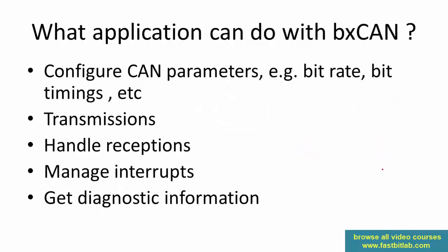As an application developer using BX CAN, you can configure CAN parameters like bit rate and bit timings. You can trigger transmissions and handle receptions. For reception, you simply get an interrupt, go to the CAN ISR, and read the FIFO — that's it. All reception filtering and moving data to the FIFO is handled by the hardware. You can get an interrupt when transmission completes, when reception occurs, and when an error happens.